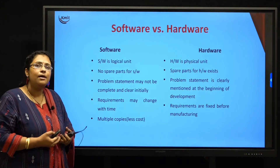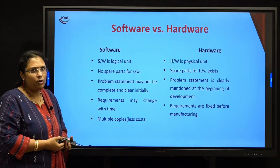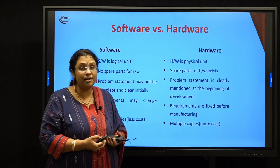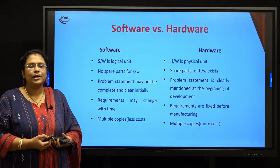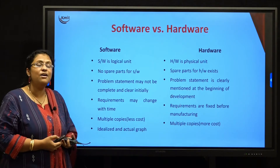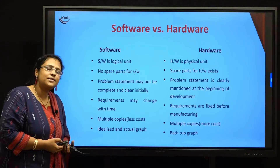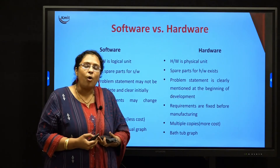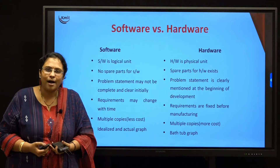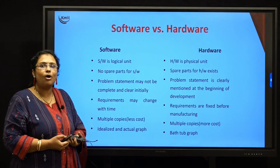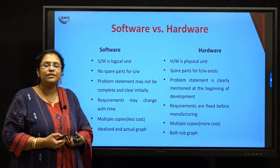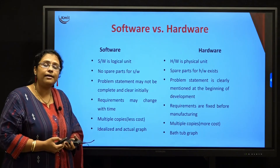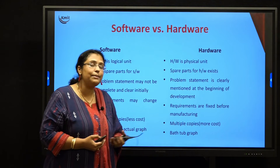In software, you can have multiple copies which will cost you very little. Whereas in hardware, you can also have multiple copies, but they are costlier compared to software. Now, the last difference between software and hardware is the failure rate. Both software and hardware will fail at a certain period of time. The lifetime of your software and hardware is decided with the help of a graph called the failure graph. The failure graph for software is called the idealized and the actual graph, and the failure graph for hardware is called the bathtub graph.